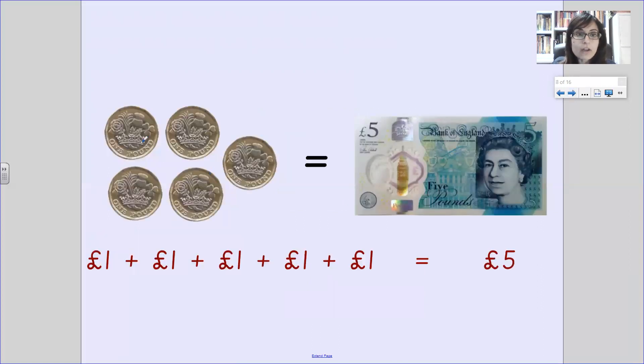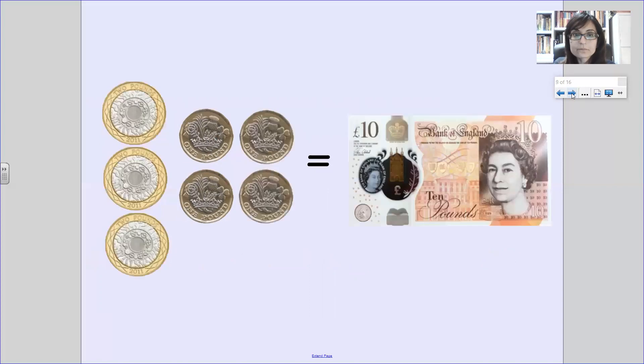Here we've got five pound coins, five one pound coins, which is the same as a five pound note. So if you had five one pound coins, it would be exactly the same as a five pound note. What do we have here? We have a ten pound note, so we can say we've got ten pounds on this side.